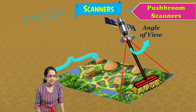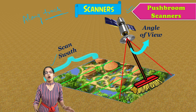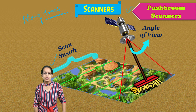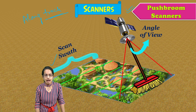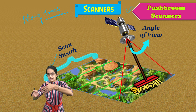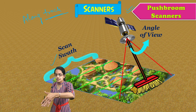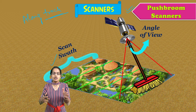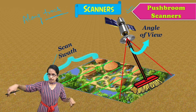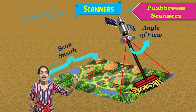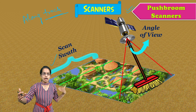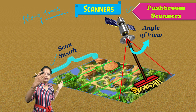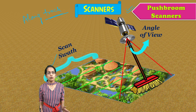This is the region which is the scan swath — the region covered on the ground. We have the angle of view and the instantaneous angle of view. We also have the total area being covered, which is the swath — the width that is actually being covered by a satellite in one go.